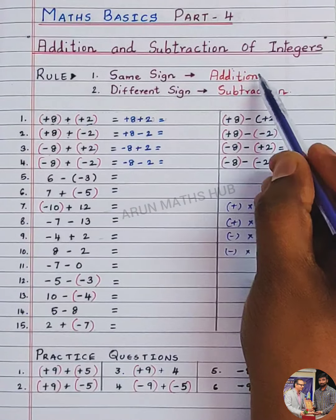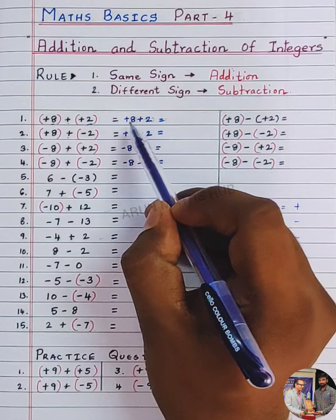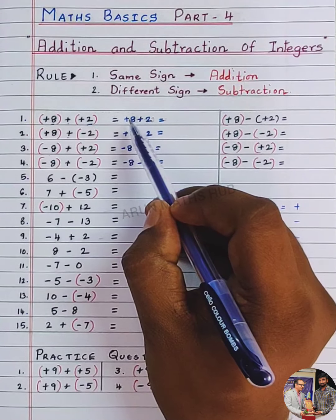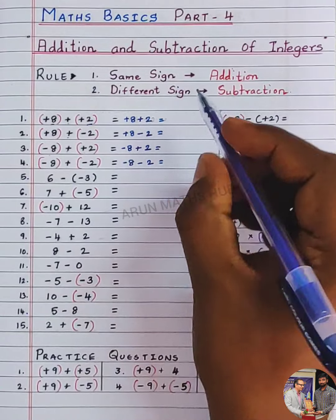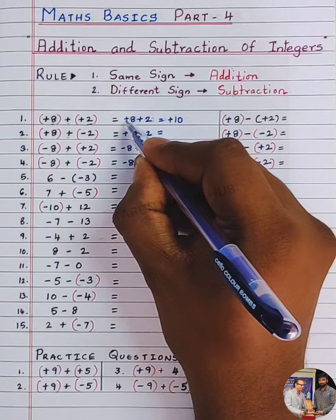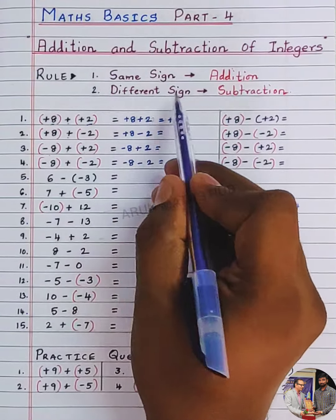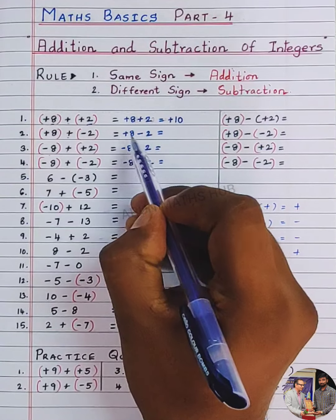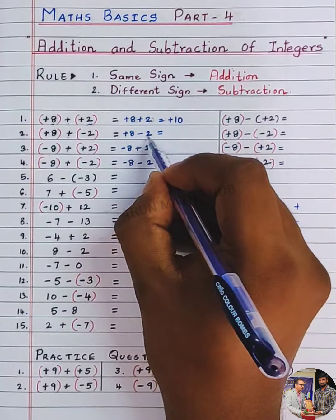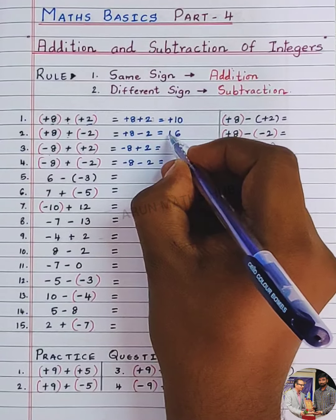Now apply this rule. You have the same sign: plus 8, plus 2 — that is plus, plus. Same sign means you should do addition. 8 plus 2 is 10. Put the bigger number's sign — 8 is the bigger number, sign is plus, so the answer is plus 10. Now different sign — plus and minus — means you do subtraction. 8 minus 2 is 6. Bigger number's sign is plus, so the answer is plus 6.